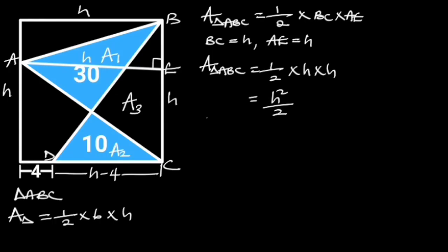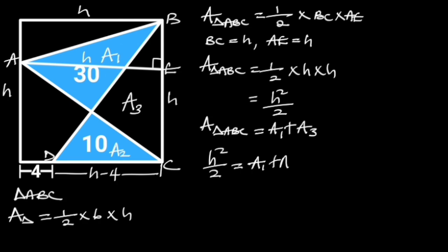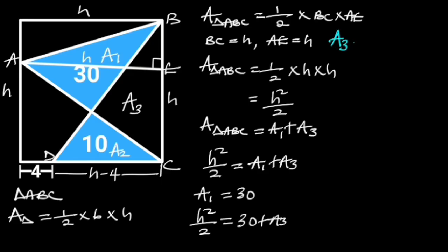Also, let's observe that the area of triangle ABC is equal to A1 plus A3. So we can say that H squared over 2 is equal to A1 plus A3. Since A1 is equal to 30, it follows that H squared over 2 is equal to 30 plus A3. Making A3 the subject of the formula, we have A3 = H squared over 2 minus 30. Let this be equation 1.